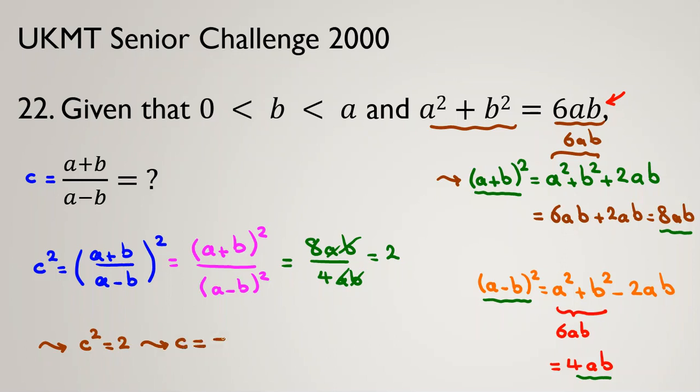So c = ±√2. But is c positive or negative? c is this fraction (a+b)/(a-b). Since a and b are positive, the numerator a+b is positive. Since a > b, the denominator a-b is also positive. Positive over positive is positive, so c is positive.